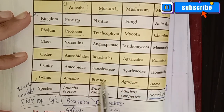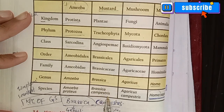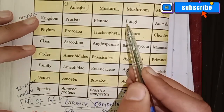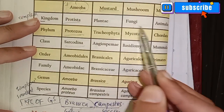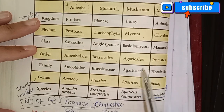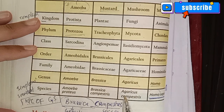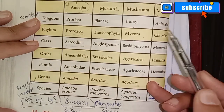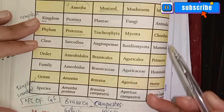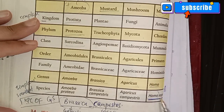For mustard: phylum Brassicales, family Brassicaceae, genus Brassica, species Brassica compestris. For mushroom: kingdom Fungi-Mycota, class Basidiomycota, order Agaricales, family Agaricaceae, genus Agaricus, species Agaricus compestris. For humans: kingdom Animalia, phylum Chordata, class Mammalia, order Primate, family Hominidae, genus Homo, species Homo sapiens. Please see the link in the description below. If you have any questions, leave a comment. Thank you so much.